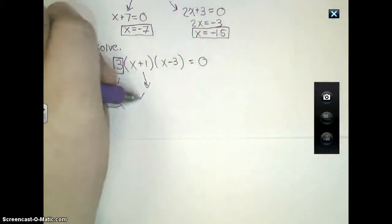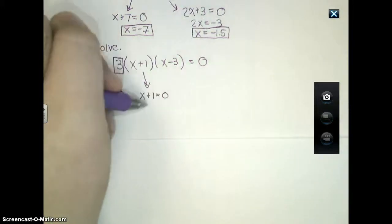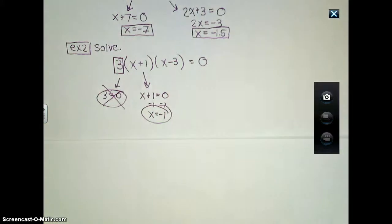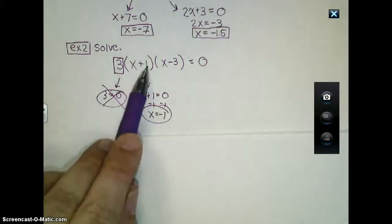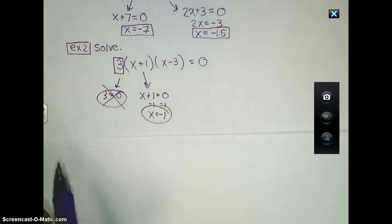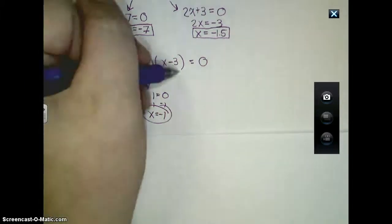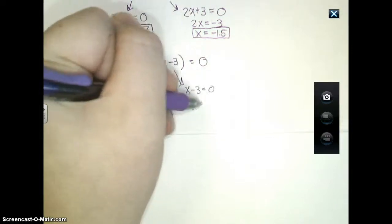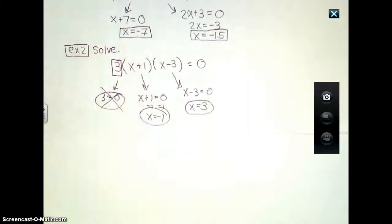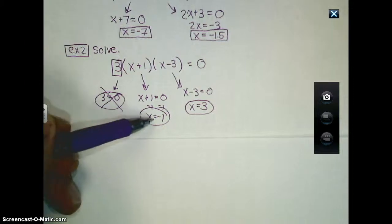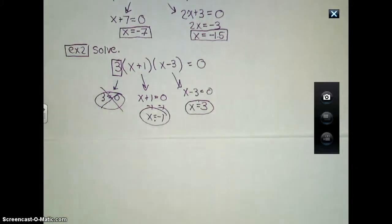But x plus one most certainly has a chance to be zero, because if I subtract one from both sides, if x were to be negative one, negative one plus one is zero, thus making this entire expression become zero through that product property. Lastly, if I take x minus three equals zero and we solve this, I'm going to get three as my other answer. And so for this equation, my two solutions will be negative one and positive three.